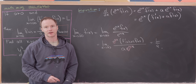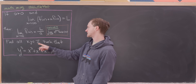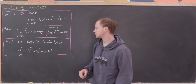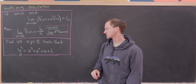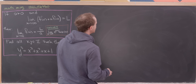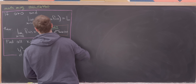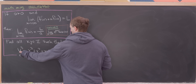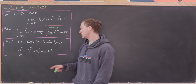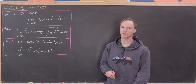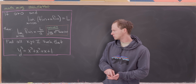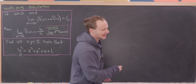Now let's look at our second problem: find all integers x and y such that y³ equals x³ plus x² plus x plus 1. The strategy is to notice that y³ is a perfect cube, and perhaps x³ + x² + x + 1 can be sandwiched between two consecutive perfect cubes.